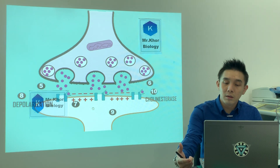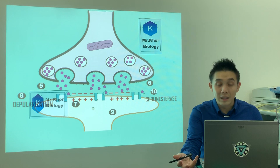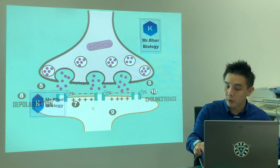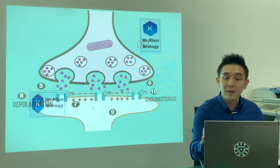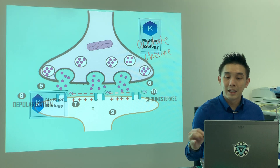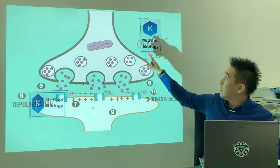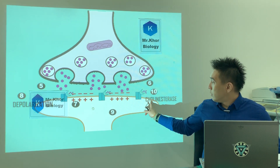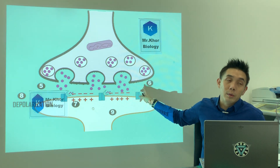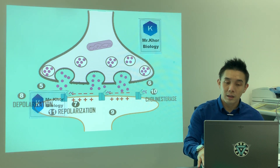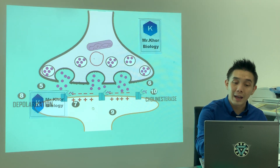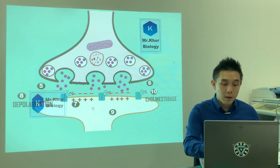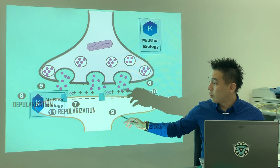There is something called acetylcholinesterase, which helps to break down acetylcholine into acetate and choline. Another function is to help with the uptake of choline so that vesicles can be reformed and acetylcholine neurotransmitters are produced again. This breakdown and recycling is also related to repolarization.